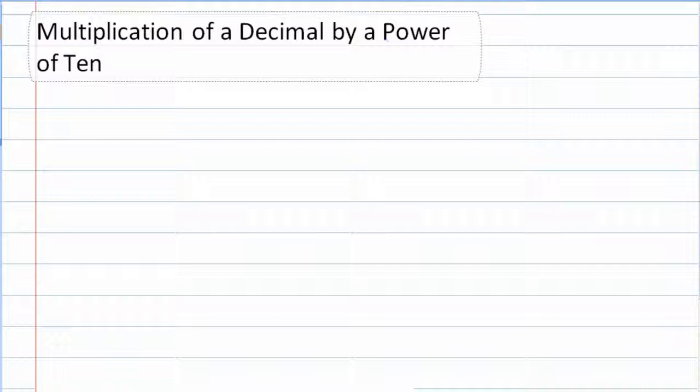So that happens in math when we're looking at the multiplication of a decimal by a power of 10. There's a shortcut that will make this really, really smooth.